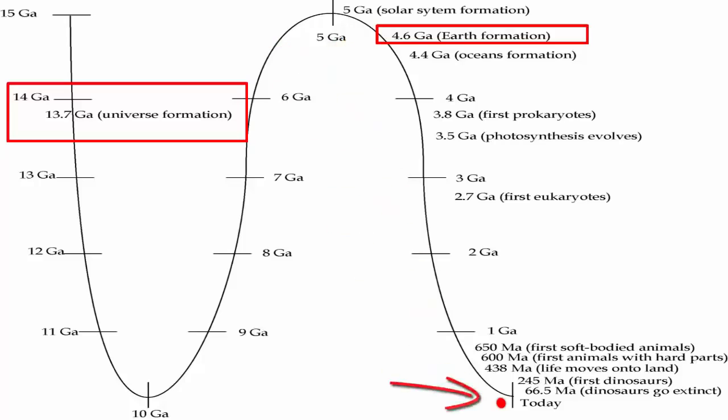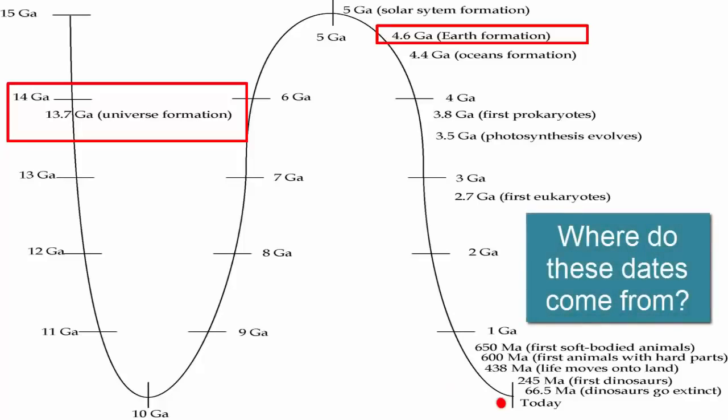What has been happening in our universe over all this time? And where are the dates and details of our timeline coming from?